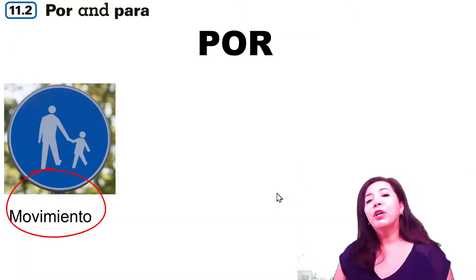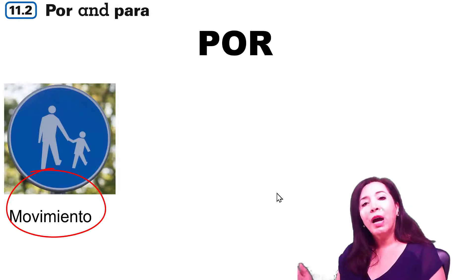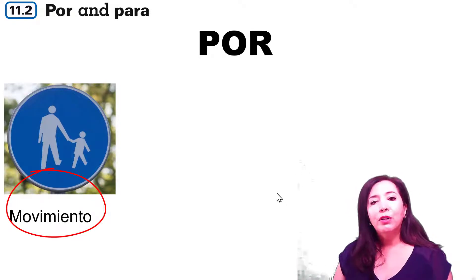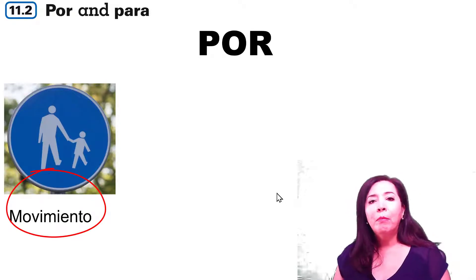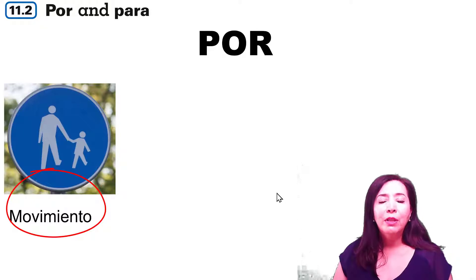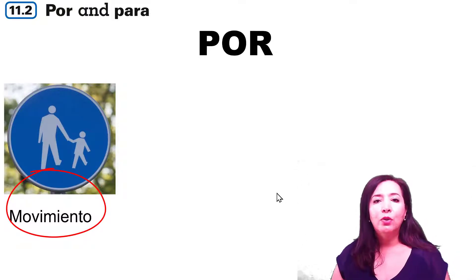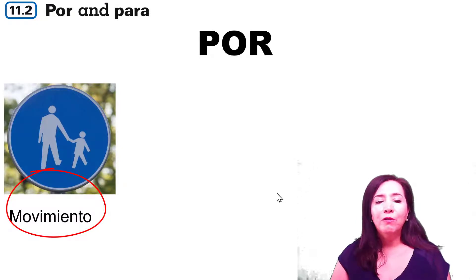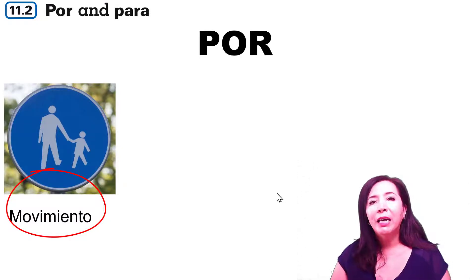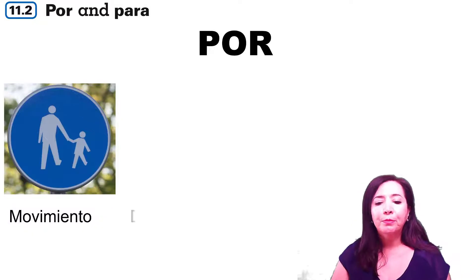Por. So if you're going a longer route or you're going by a highway, for example, then use por. Por ejemplo: camino por el parque en las mañanas, o voy por la autopista. In both of those cases it's movement, but it's by, along, or through.